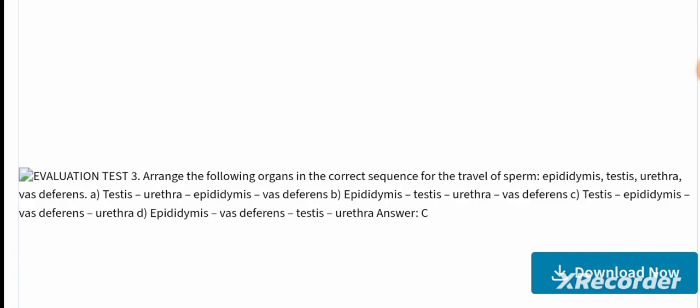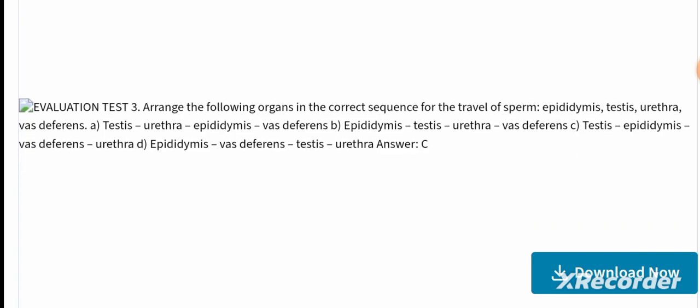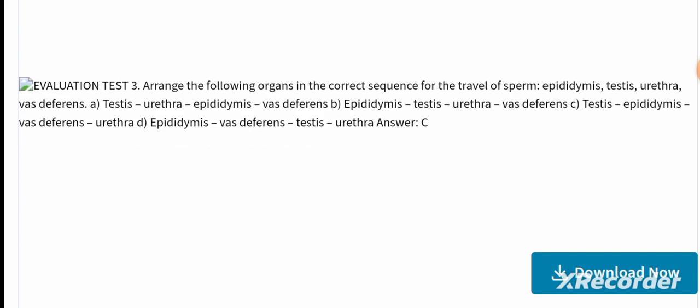Evaluation test 3 — Arrange the following organs in the correct sequence for sperm travel: epididymis, testes, urethra, and vas deferens. Option A: testes, urethra, epididymis, vas deferens. Option B: epididymis, testes, urethra, vas deferens. Option C: testes, epididymis, vas deferens, urethra. Option D: epididymis, vas deferens, testes, urethra. The correct answer is option C: testes → epididymis → vas deferens → urethra, because sperm is produced in the testes and then stored in the epididymis before traveling onward.